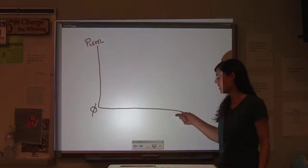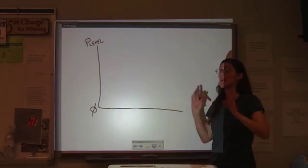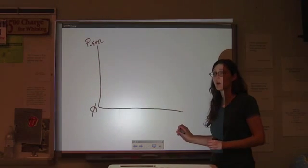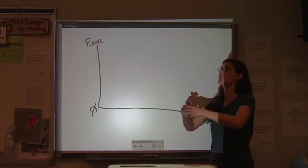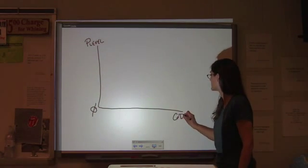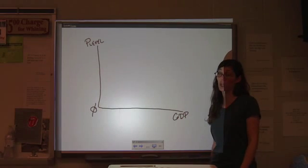Now, along the bottom axis, instead of looking at just quantity demanded, we need to look at it in terms of the total quantity demanded. We're going to call that GDP.